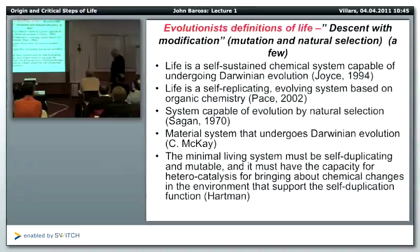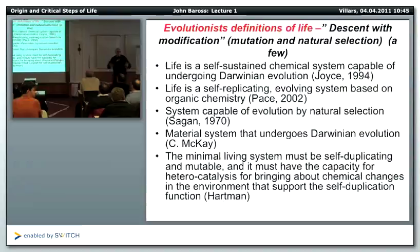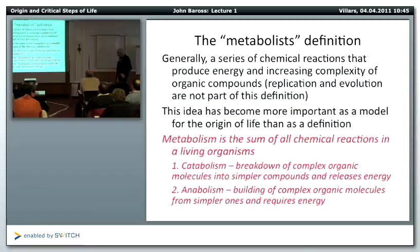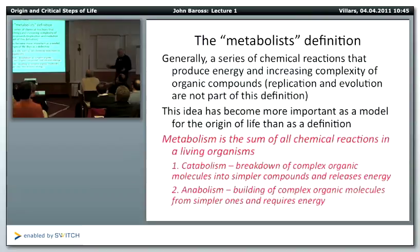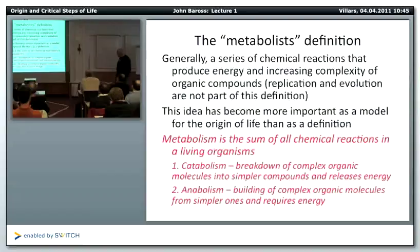The metabolist definition generally calls for a series of chemical reactions that produce energy and increasing complexity of organic compounds, with replication and evolution not part of this early definition. The idea in the metabolist view is that unless you have an ongoing set of reactions that not only produce organic compounds but also energy, you cannot reach the complexity of life as we know it. This has become much more important as a model for the origin of life.